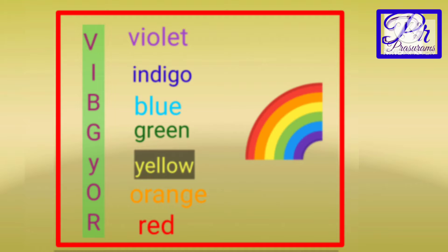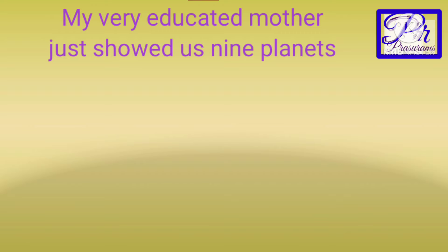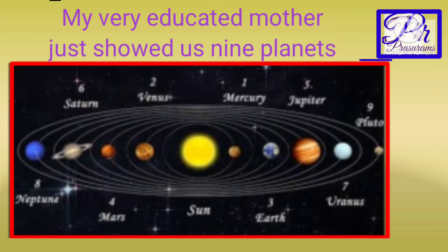For example, the acronym VIBGYOR is a mnemonic to remember the order of the colors in a rainbow. Another one is 'My very educated mother just showed us 9 planets' — you might be knowing this one. This is a mnemonic used to remember the 9 planets in the solar system.